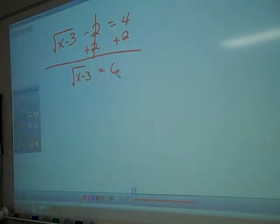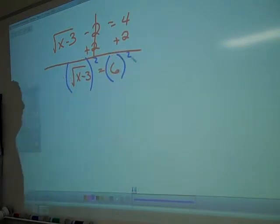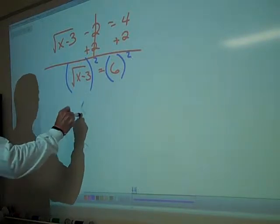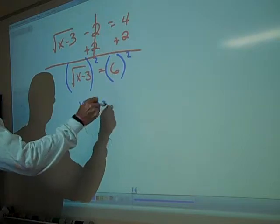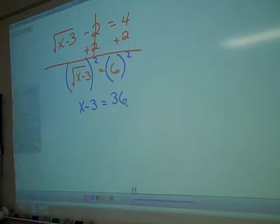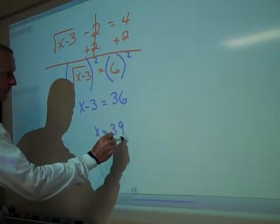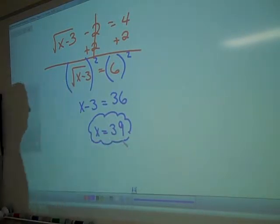Now, is our radical all by itself? Yes. So what do you think you're going to do to get rid of that radical? Square both sides. Square the left side, square the right-hand side. What is the square root of x minus 3 squared? X minus 3. 6 squared? 36. How do you get x by itself? Add 3 to both sides. X equals 39.